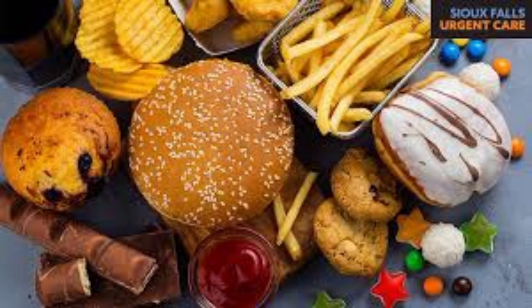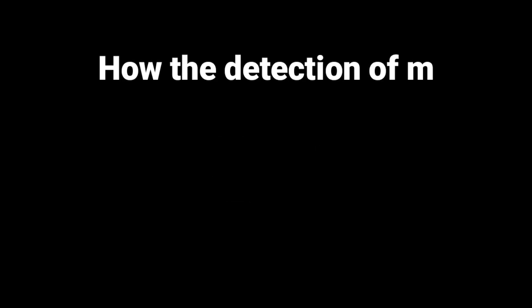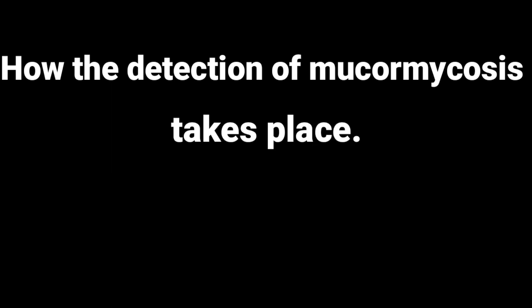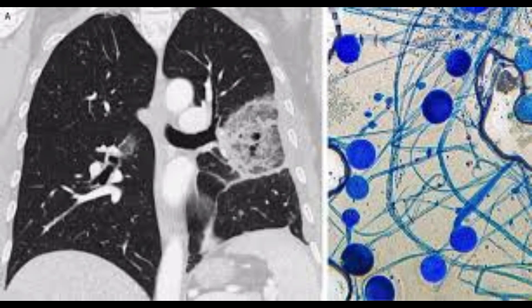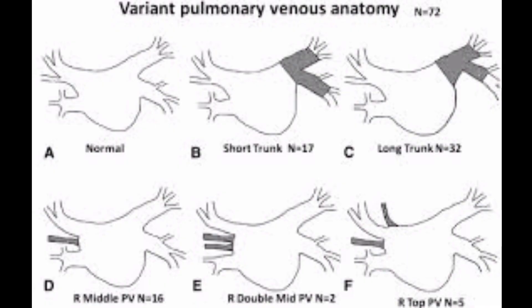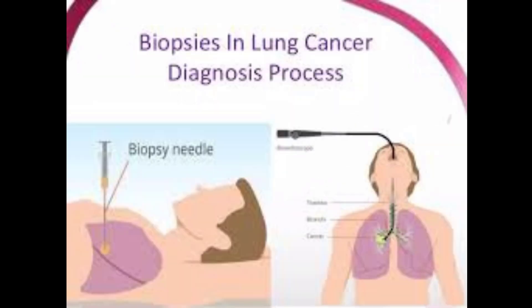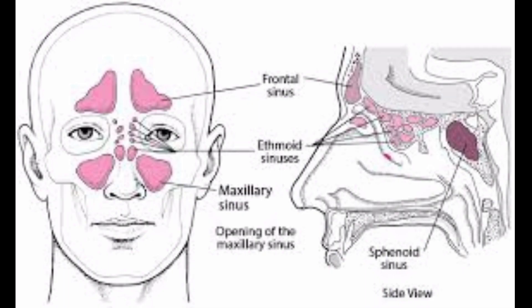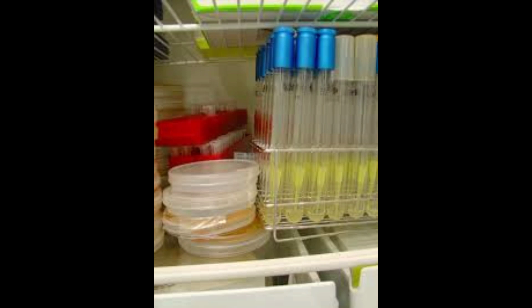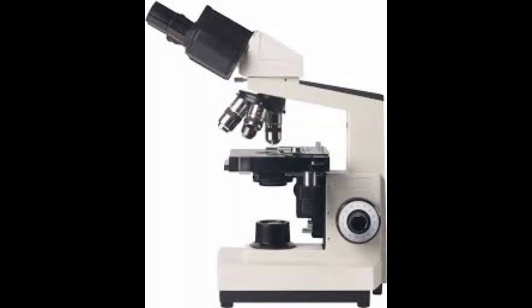Let's understand how the detection of mucormycosis takes place. For pulmonary mucormycosis, a biopsy from the lungs can be performed, or if the sinuses are affected, samples are taken from the sinuses and sent to a lab where culture experiments are performed. Using a microscope, you can also determine whether the fungus has infected the body. Your doctor may also prescribe a CT scan in specific cases.